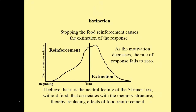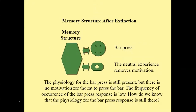The line on the right of the figure shows the rat is still motivated to respond at a high rate. Frustrated, the rat responds at an even higher rate for a while. Then as the motivation gradually changes on the memory structure, the response rate decreases to a low rate. I believe that it is the neutral feeling of the Skinner box without food that associates with the memory structure, thereby replacing the effects of food reinforcement. The memory structure after extinction still has the physiology for the bar press, but there is no motivation for the rat to press the bar.